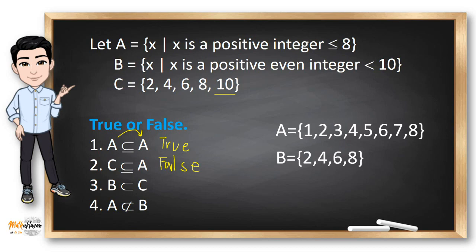Number 3: Is B a subset or a proper subset of C? Notice that B has elements 2, 4, 6 and 8. C also has these elements 2, 4, 6 and 8. Since B is not equal to C, we can say that B is a proper subset of C.